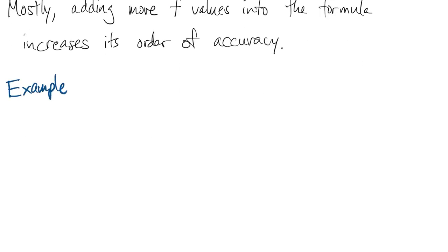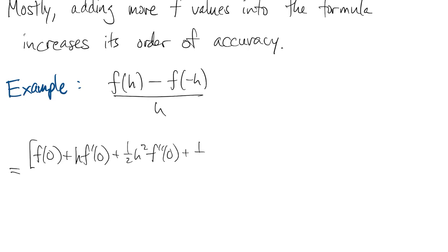For example, here is our smallest centered formula, that should be two h in the denominator. Remember that we derived it using three points even though one of them dropped out in the final result.